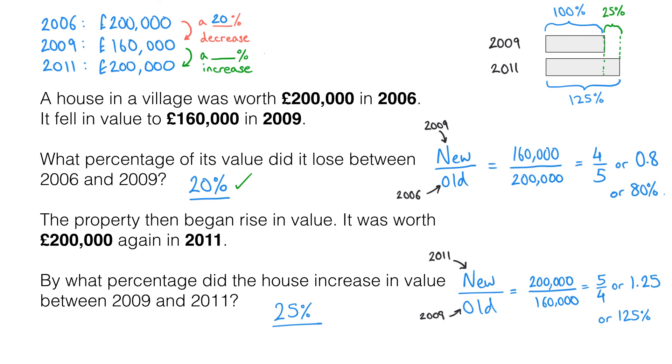Let's quickly check this makes sense. Remember what we're saying is that from 2009 to 2011 we are having a 25% increase. So let's find 25% of 160,000 pounds. 25% is a quarter and a quarter of 160,000 is 40,000, and we can see that yes indeed we add 40,000 onto this to get to 200,000. So that is a 25% increase.